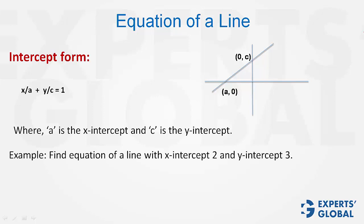Example: find the equation of a line with x-intercept 2 and y-intercept 3. a is equal to 2 and c is equal to 3 in this example. So, the equation of the line must be x upon 2 plus y upon 3 is equal to 1. Simplify this. You get 3x plus 2y is equal to 6. That is the equation of the required line.